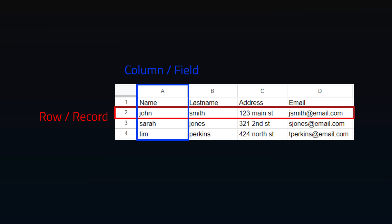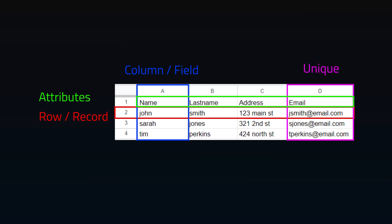Now within these rows, we have columns or fields. These columns group related information together under each attribute — think name, last name, address, and email. And each record would have a unique email for a specific customer.